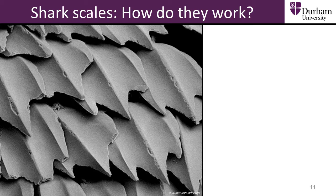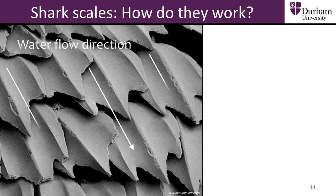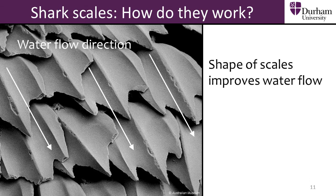As we have seen previously, shark scales, called denticles, are present on almost all of a shark's body. The effect of the scales is a reduction in drag. The grooves present on the denticles run parallel to the flow of water when the shark swims. These grooves reduce the formation of vortices around the shark's body and as a result water flow is less turbulent, reducing the shark's drag.